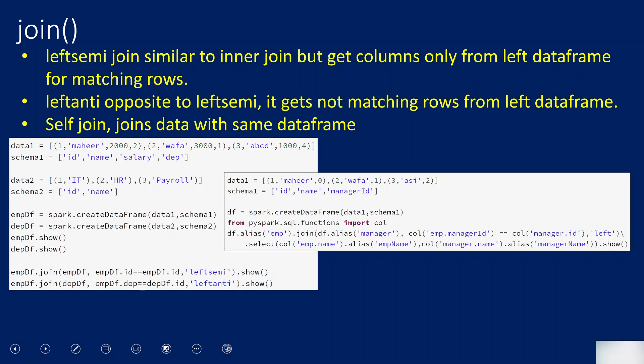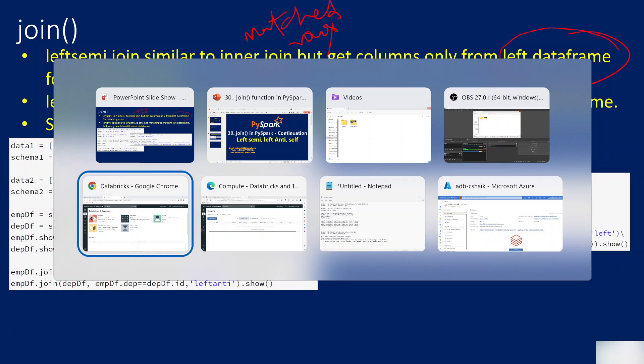So firstly, what is left semi join? Left semi join is actually similar to inner join. If you remember, inner join gives you matched rows from both tables. Here also you will get matched rows only, but the columns will come only from the left data frame. Let me practically show you that so it will make sense.